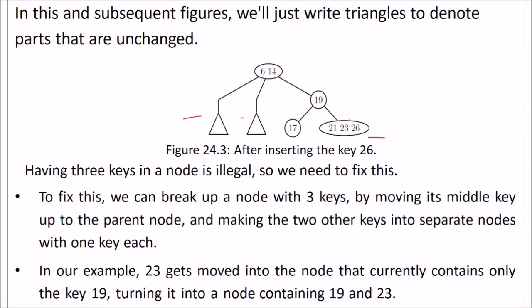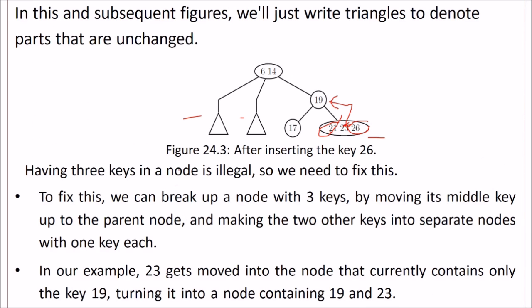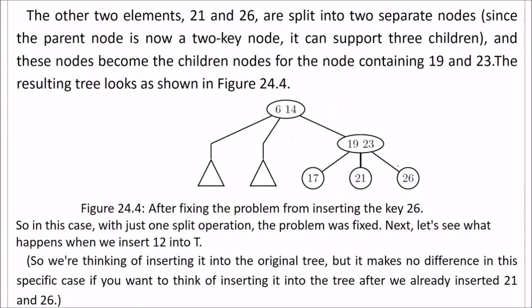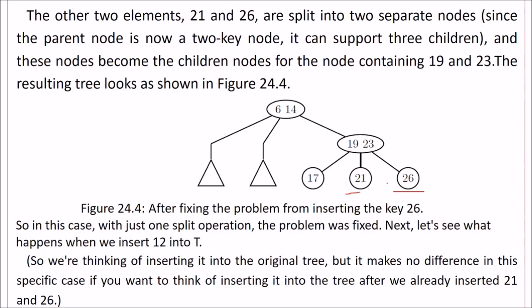To do this, we can break up the node into three keys. We move its middle key, 23, to the parent and make the two other keys into separate nodes. We'll make two more nodes, one of 21 and one of 26. In our example, this 23 gets moved into the node that currently contains only 19, turning it into a node containing 19 and 23. The two elements 21 and 26 are split into two separate nodes.